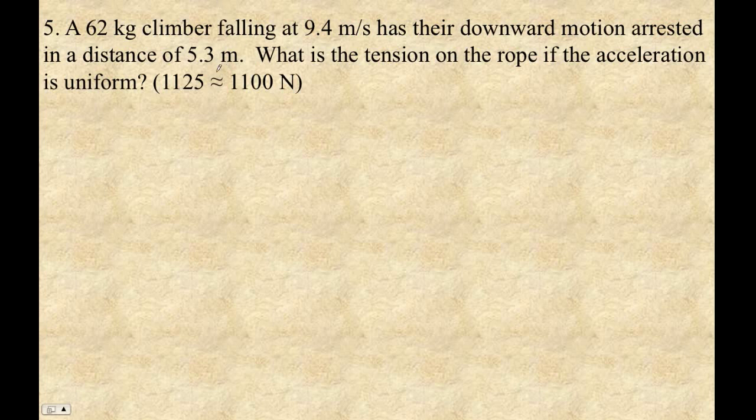Okay, this is example five here. This climber is falling at 9.4 meters per second. Their downward motion is arrested in a distance of 5.3 meters. What is the tension in the rope if the acceleration is uniform?